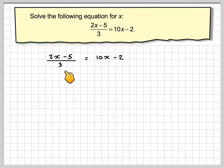So what we need to do, what makes this difficult, is the 3 here. So what we need to do is multiply the whole equation by 3. If you multiply this side by 3, the 3 will cancel out, we'll just get 2x minus 5. And then we're going to do 3 brackets, 10x minus 2.